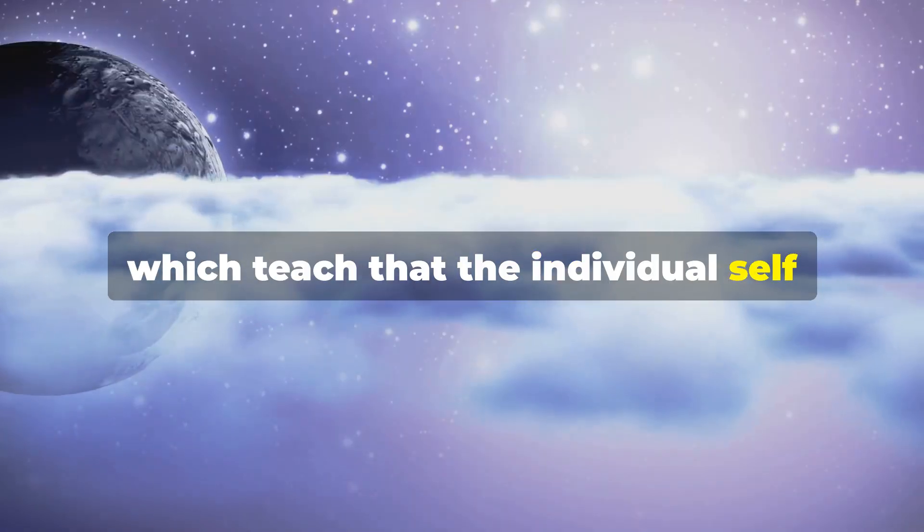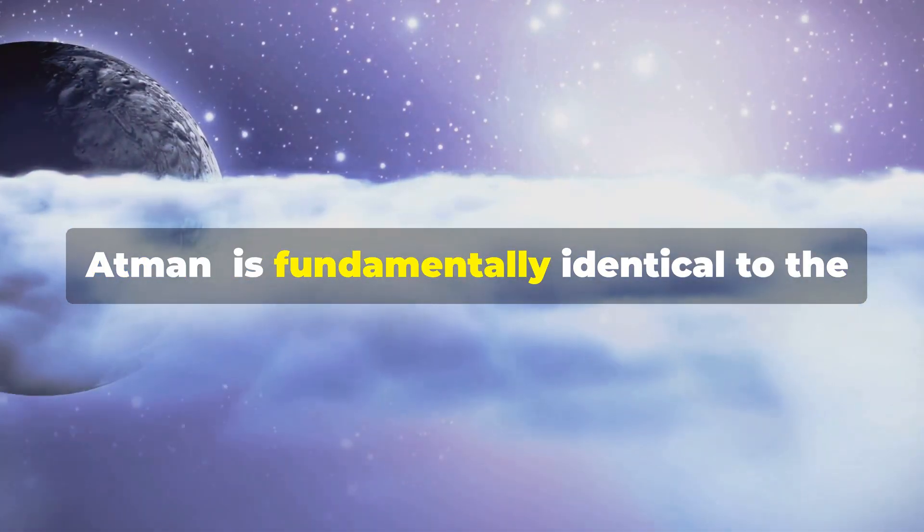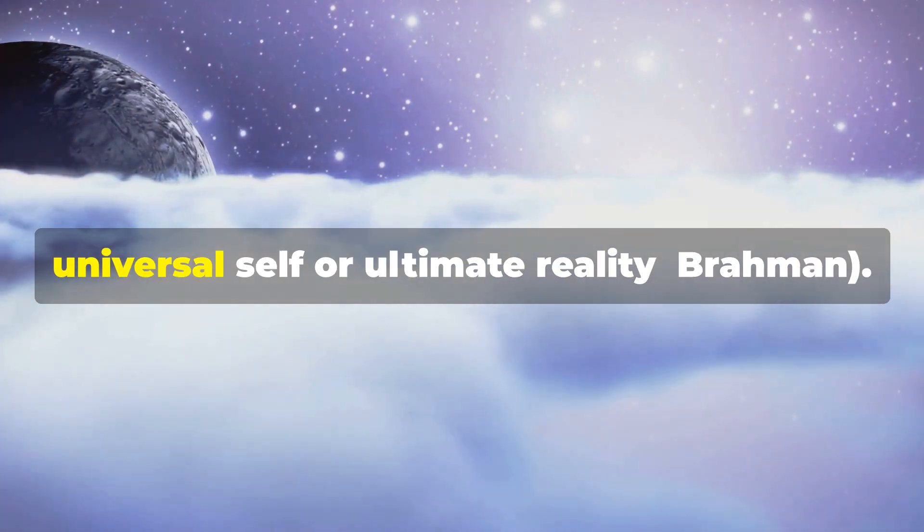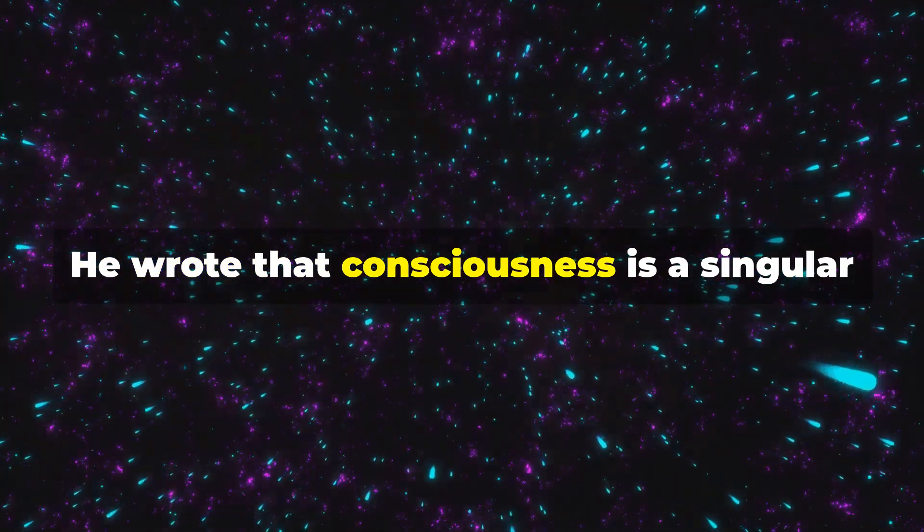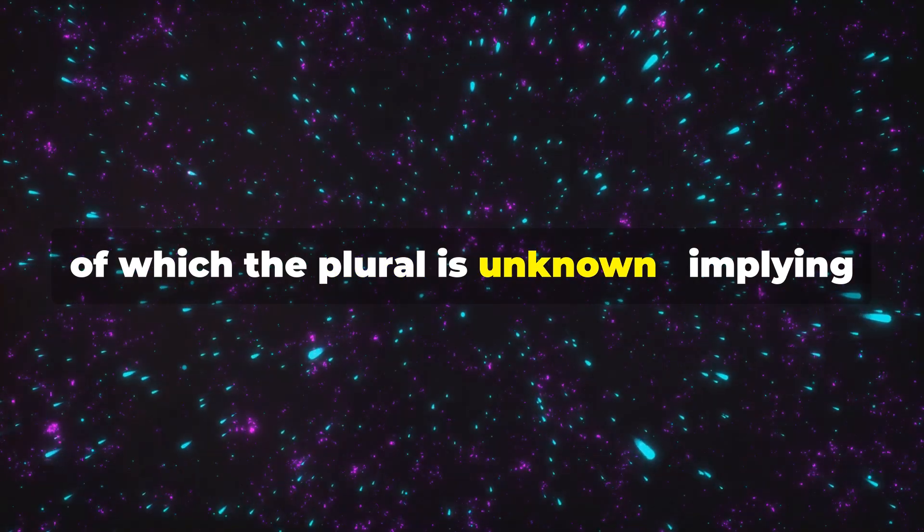Schrödinger referenced the Upanishads, which teach that the individual self, Atman, is fundamentally identical to the universal self or ultimate reality, Brahman. He wrote that consciousness is a singular of which the plural is unknown.